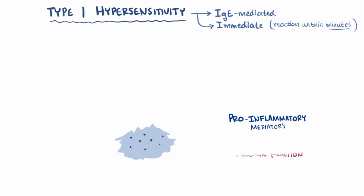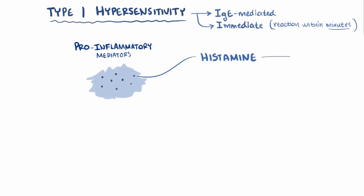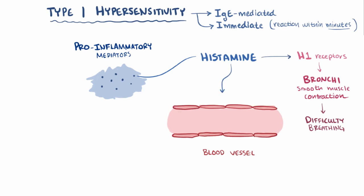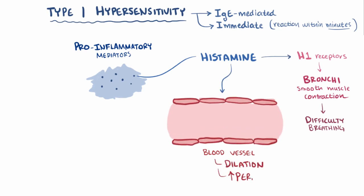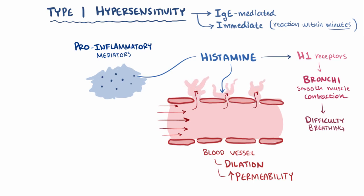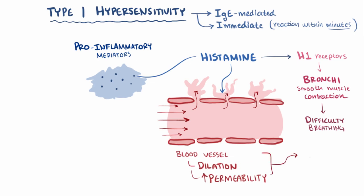One of the major mediators released in an allergic reaction is histamine. Histamine binds to H1 receptors and causes the smooth muscles around the bronchi to contract, which means the airways get smaller, making it more difficult to breathe. It also causes blood vessel dilation and increased permeability of the blood vessel walls, meaning that while blood vessel diameter increases and blood flow to the affected area increases, fluid is allowed to more easily leak out the blood vessel walls and get into the interstitium, the spaces between the cells, which causes edema and swelling, and urticaria, or hives.